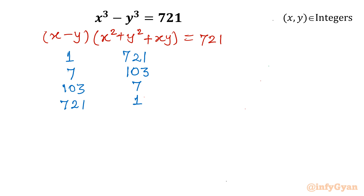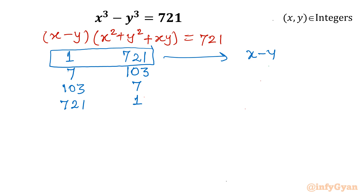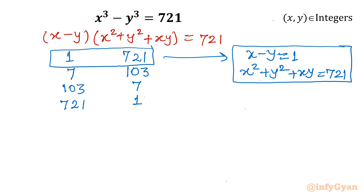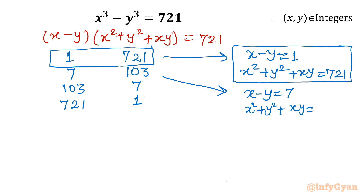Now we have got four systems of equations. For the first factorization, x - y = 1 and x² + y² + xy = 721. This is our first system of equation. For the second system: x - y = 7 and x² + y² + xy = 103.